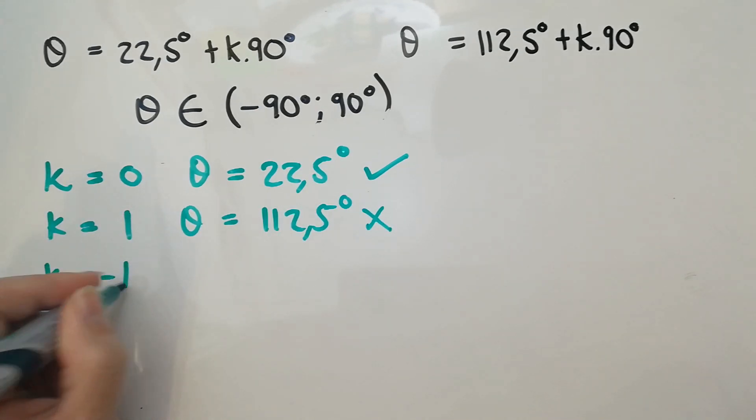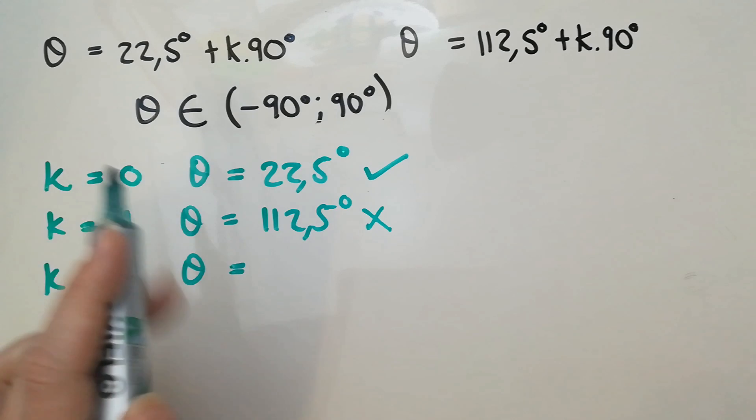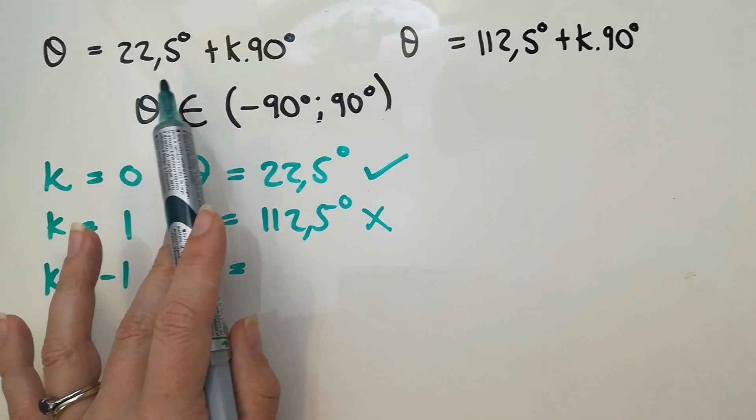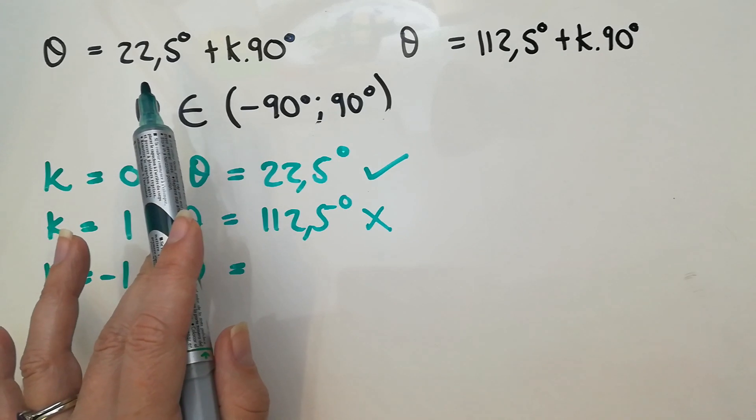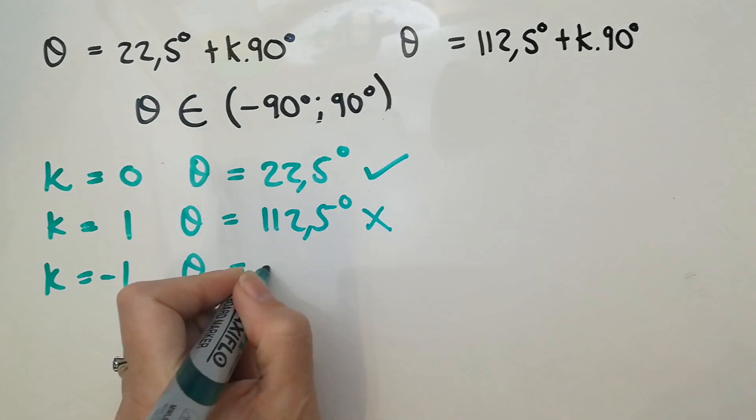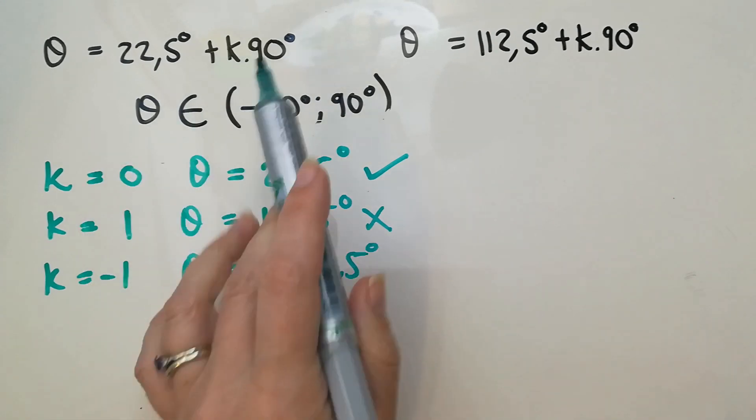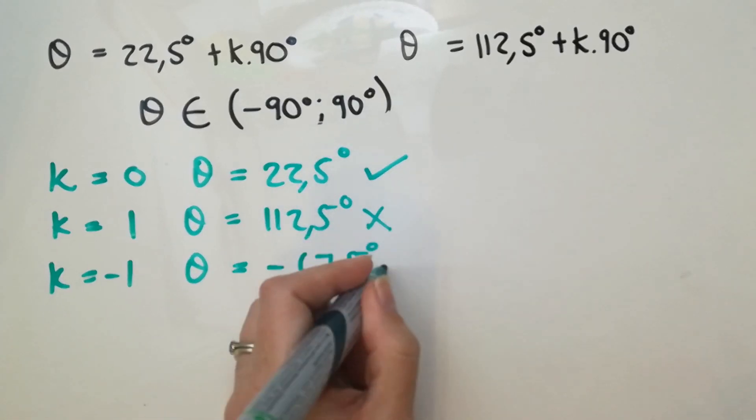What about negative one? So we're going to take the 22.5 and we are going to effectively minus 90 degrees. That gives me negative 67.5 degrees. Does that fit in? It does, so that works.